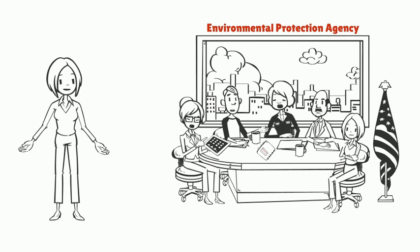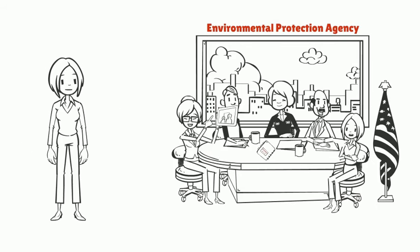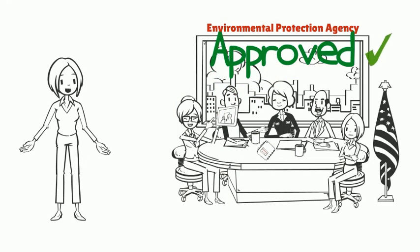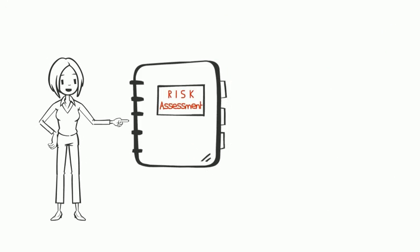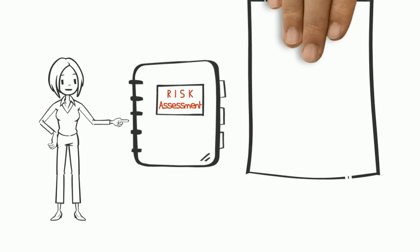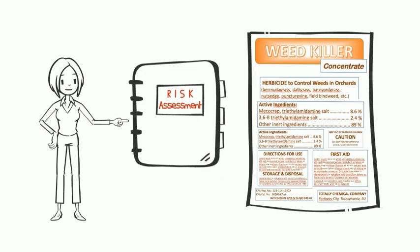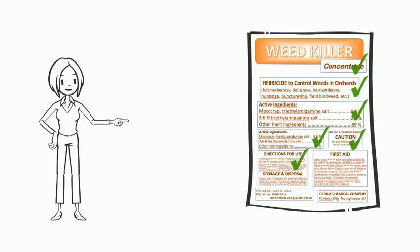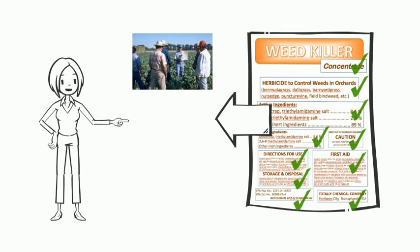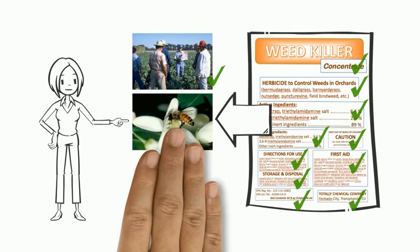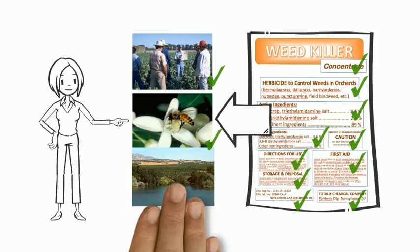Once EPA determines that a pesticide meets the necessary safety standards, a pesticide is approved for use. The key information gathered from the risk assessment determines the directions included on the pesticide label. These directions reflect the uses that were evaluated in the risk assessment process and determined to be unlikely to pose any unreasonable risks to non-target organisms and the environment.